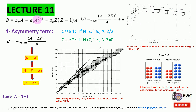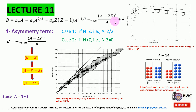In that lecture we discussed that the first three terms in the binding energy expression are inspired from the liquid drop model — that is the volume term, the surface energy, and the Coulombic energy. The last two terms, the asymmetry term and the pairing term, are the quantum corrections. These are the terms we discussed in lecture number 11.